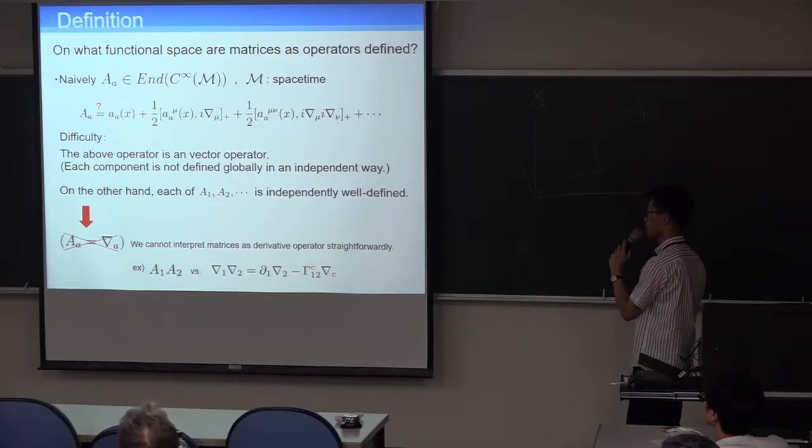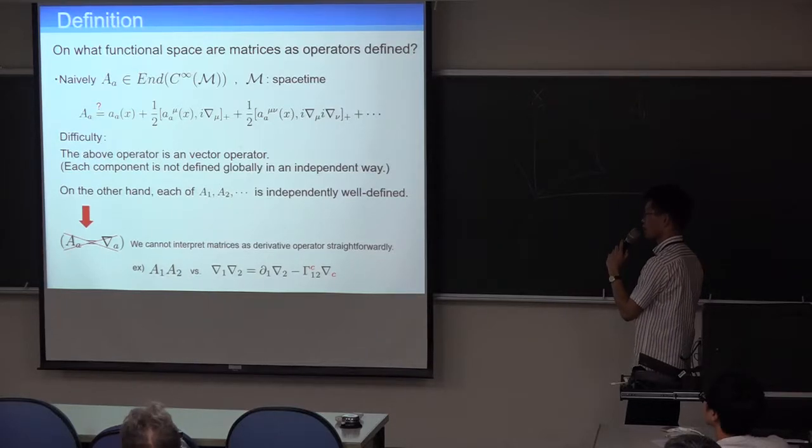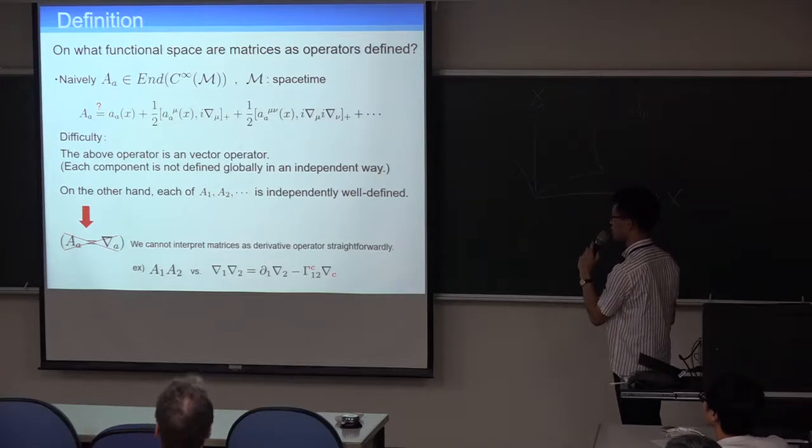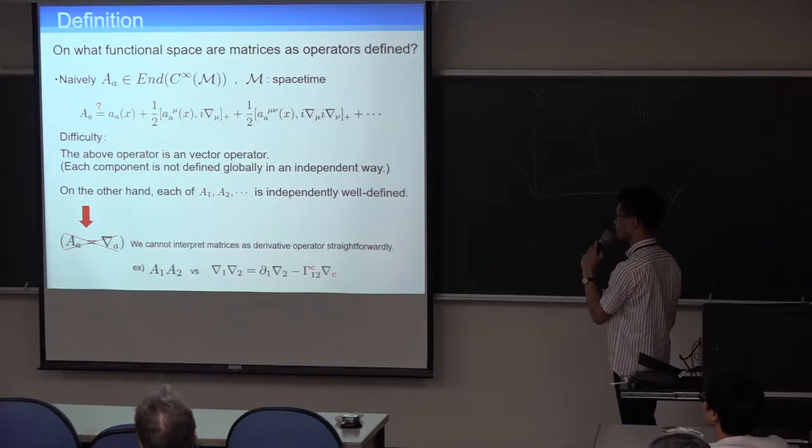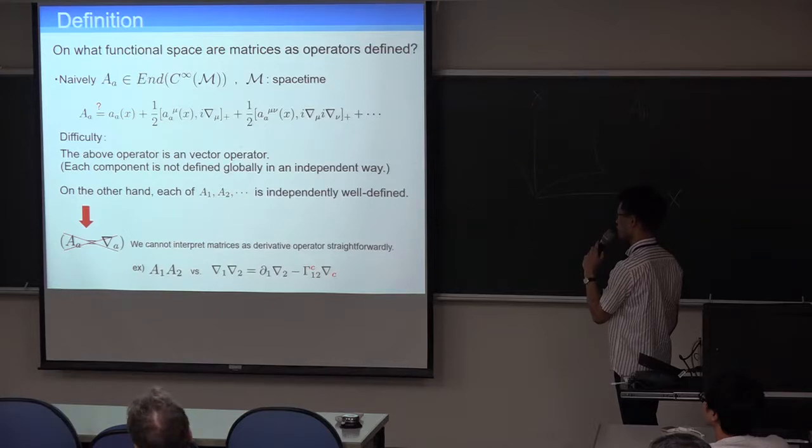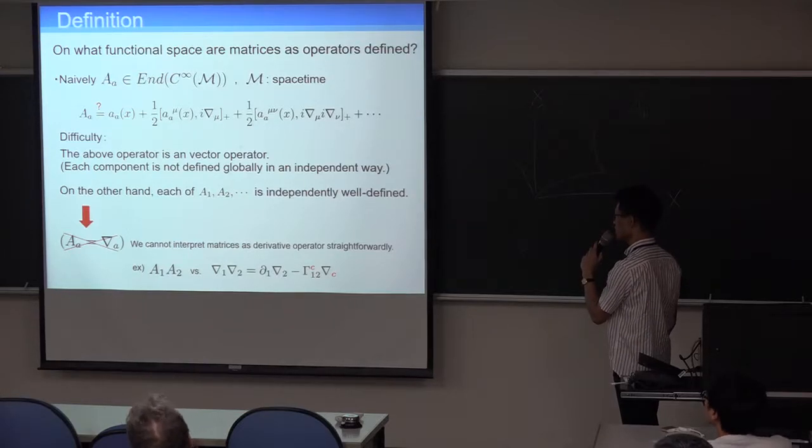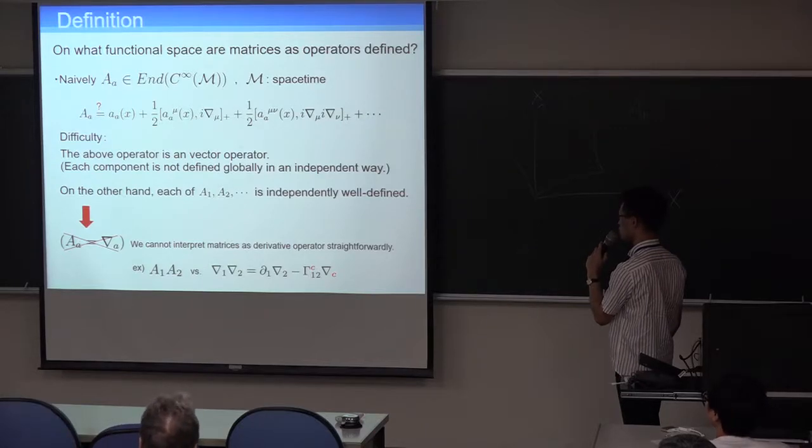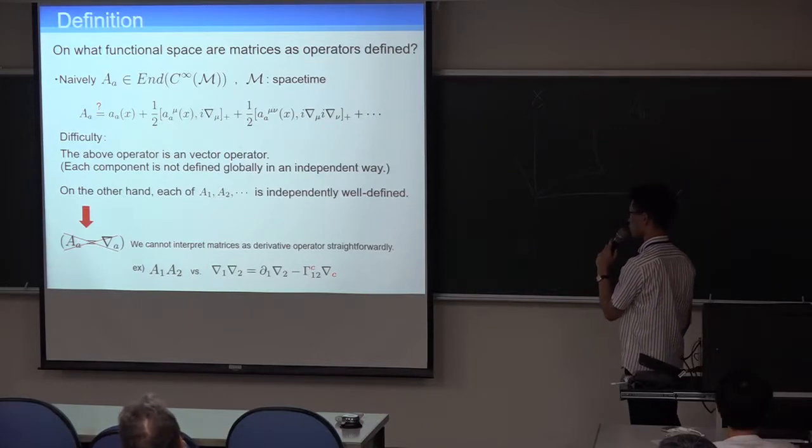On what functional spaces are matrices defined? I agree matrices is endomorphism of some smooth function defined on space-time. So we'd like to expand matrices as covariant derivative operators. But it has some difficulty. Most of all, the above operator is a vector operator. So each component of the operator has to be mixed under the Lorentz transformation. On the other hand, each of matrices A1, A2, and so on, is independently well defined.